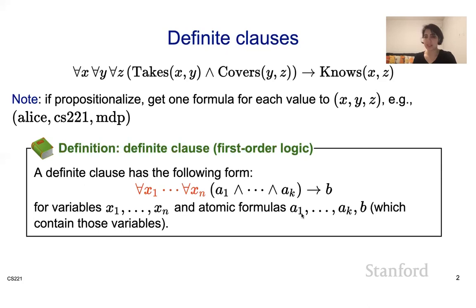More formally, a definite clause has the following form: a for-all quantifier for x1 through xn, where x1 through xn are variables. We have atomic formulas a1 through ak and b — all atomic formulas. We end these atomic formulas a1 through ak together, and that implies b. Remember, these atomic formulas actually contain the variables x1 through xn inside of them. So this is a definite clause in first order logic.